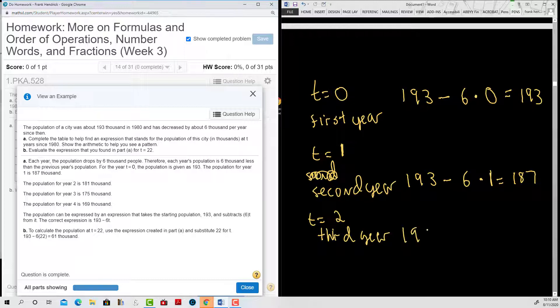So let's start out with 193, and then decrease by... this is referencing the first year, so we enter that. Now zero, one, t equals two, so we're looking at two years after the initial year which will make it 181 thousand.